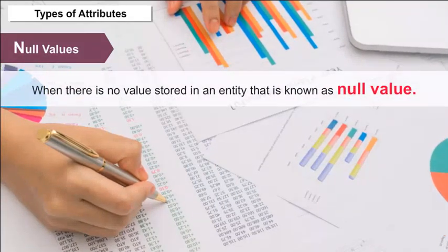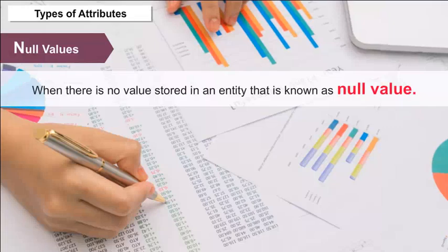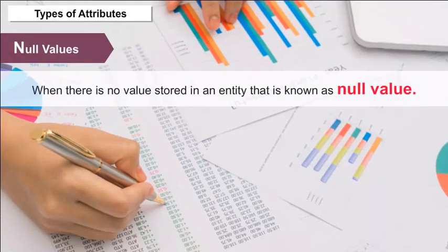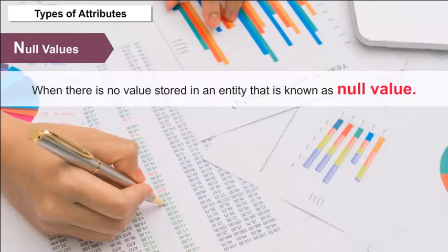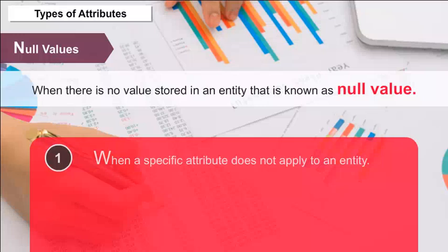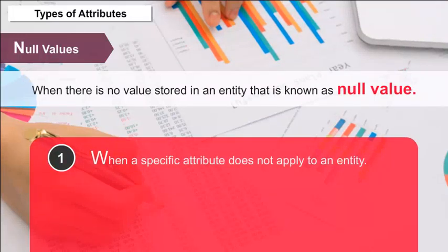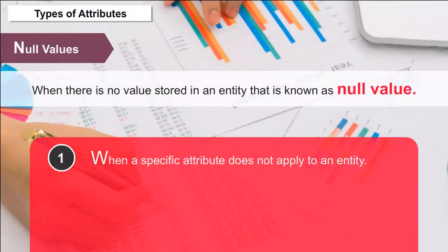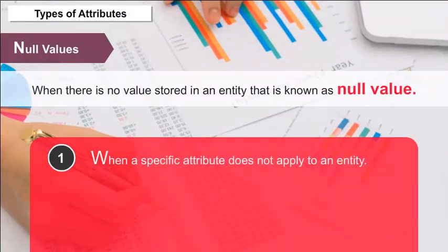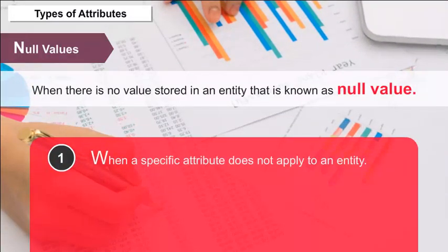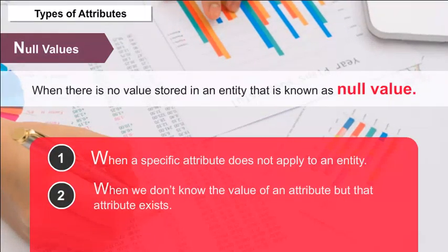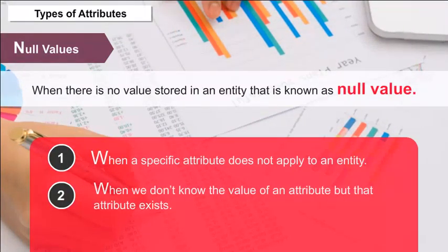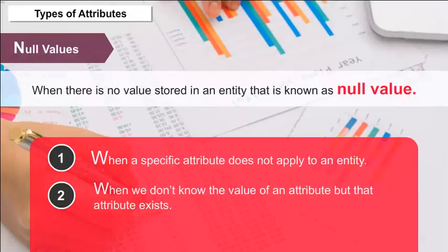Null Values — when there is no value stored in an entity, that is known as a null value. We use null values in three situations: 1. When a specific attribute does not apply to an entity. 2. When we don't know the value of an attribute but that attribute exists.